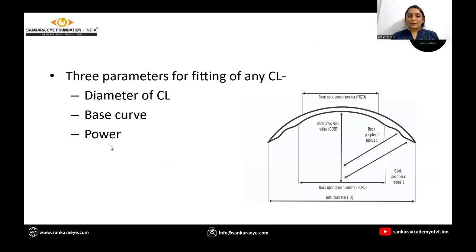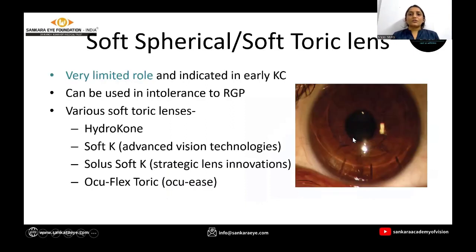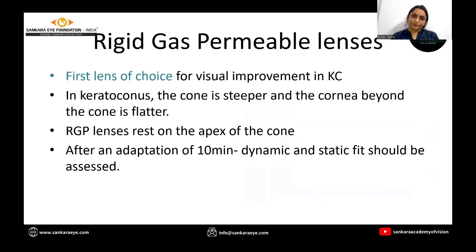There are three basic parameters for fitting any contact lens: one is the diameter, second is the base curve, and third is the power. Soft toric or soft spherical lenses have a very limited role in early keratoconus and can be used only in cases of intolerance to RGP.